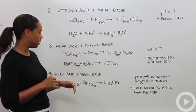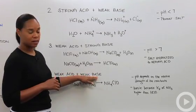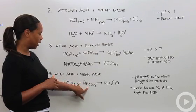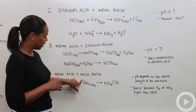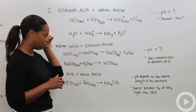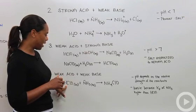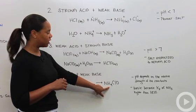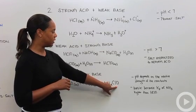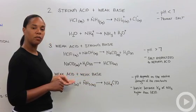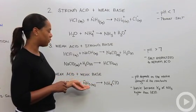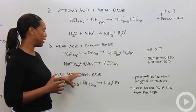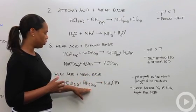The last scenario is a weak acid and a weak base. Here we have hypochlorous acid plus ammonia — the lone unpaired electrons remind us it's acting as a weak base — and ammonia can remove the proton from hypochlorous acid to form ammonium hypochlorite (NH4⁺ and ClO⁻). The pH situation here is different: since you have both a weak acid and a weak base, the overall pH depends on the relative strength of your reactants.